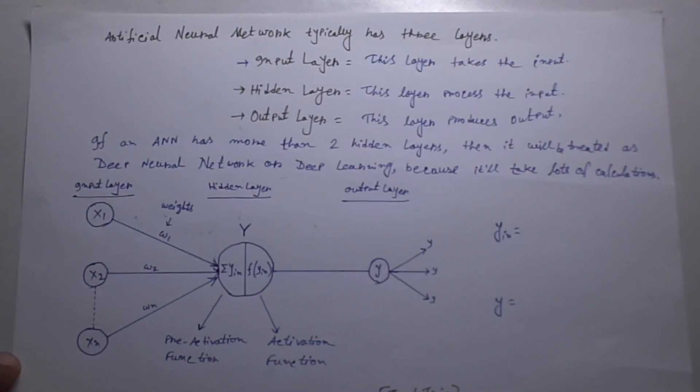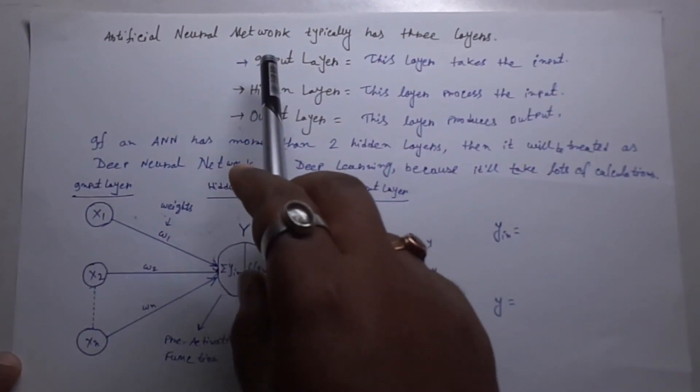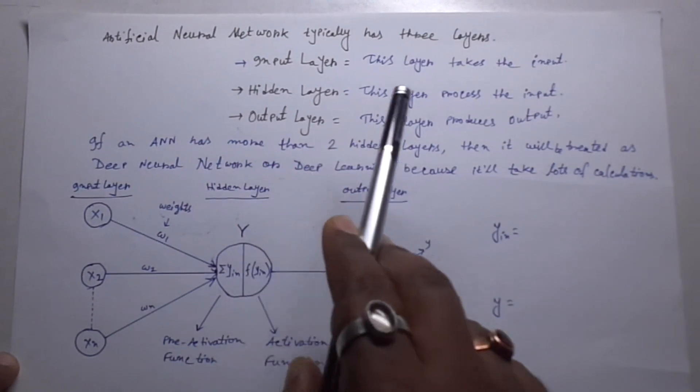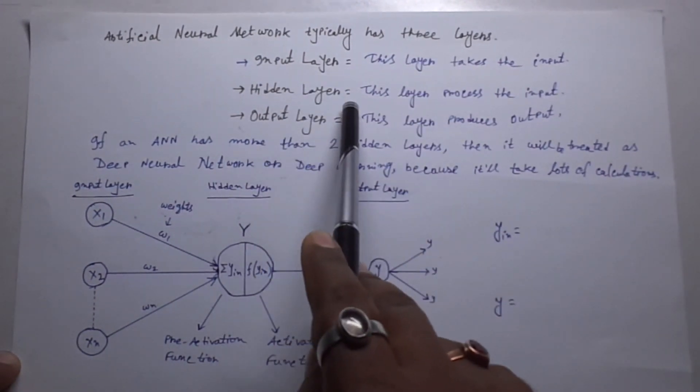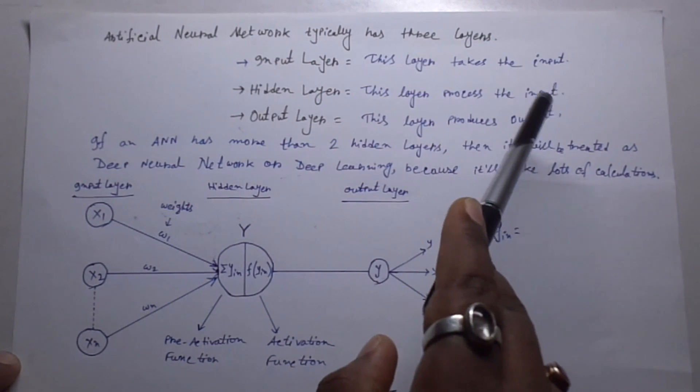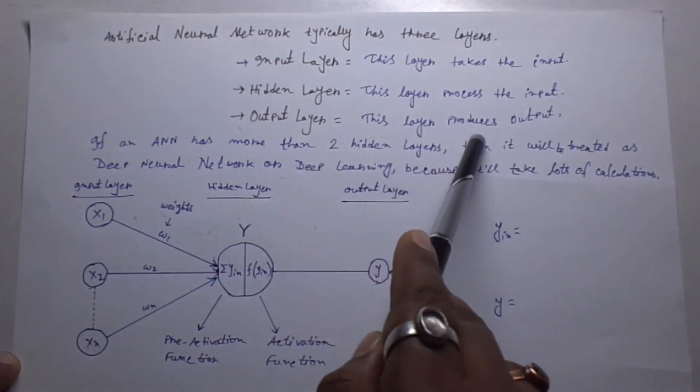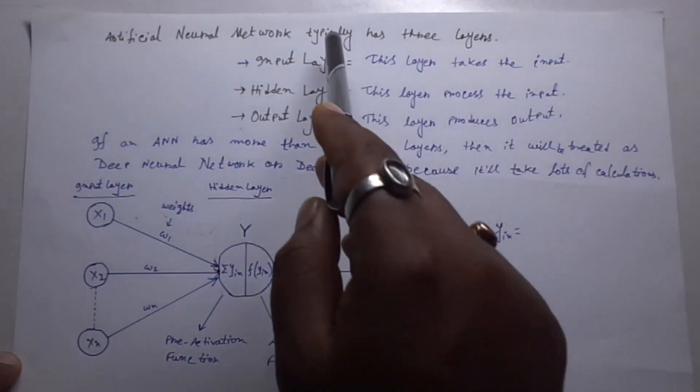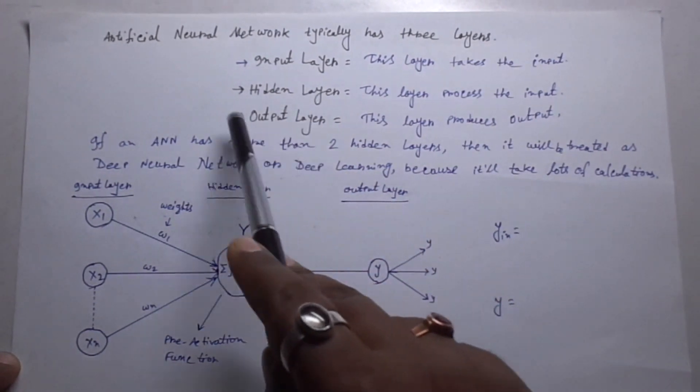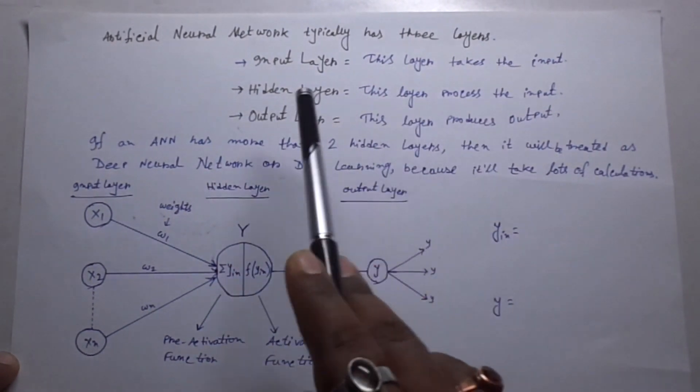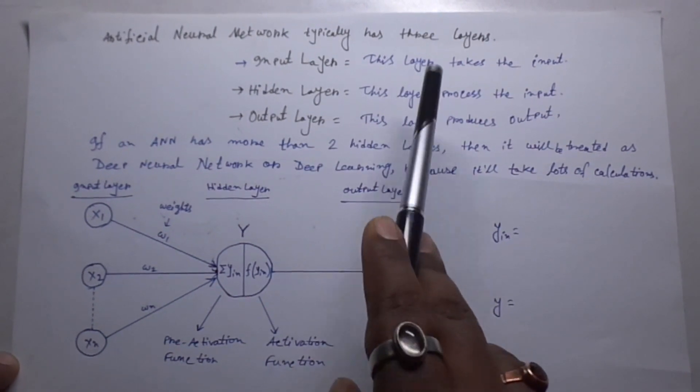Artificial neural network typically has three layers. The first one is input layer. This layer takes the input. Then we have hidden layer. This layer processes the inputs. Output layer. This layer produces the output. We can control the input layer and output layer but can't control the hidden layer. We don't know what is happening in the hidden layer.